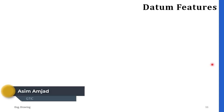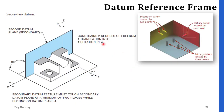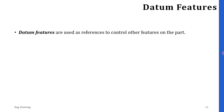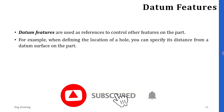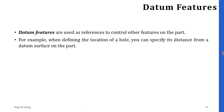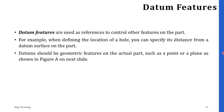In this video I will tell you about datum features. Datum features are basically used as a reference to control other features on the part. For example, when you define the location of a hole, you have to specify its distance from the datum surface on the part. The datum should be geometric features on the actual parts, such as a point or a plane.